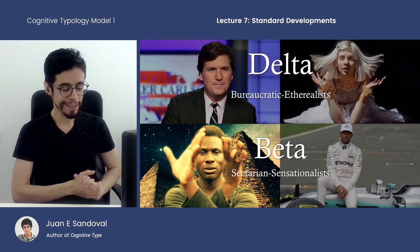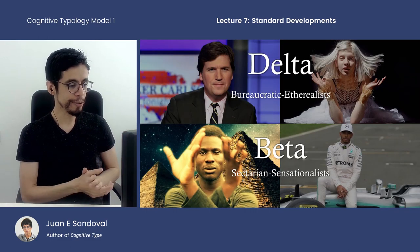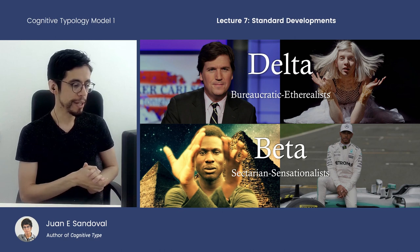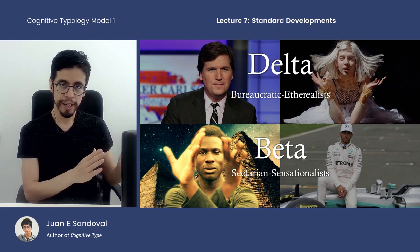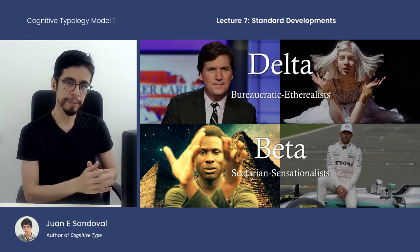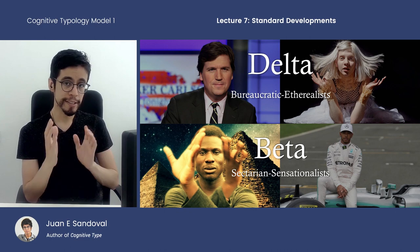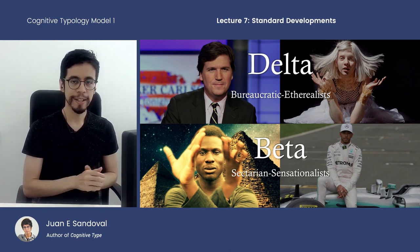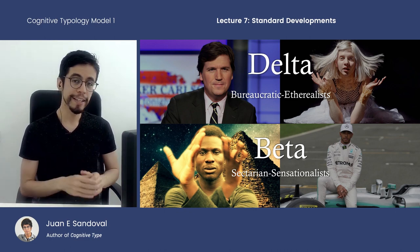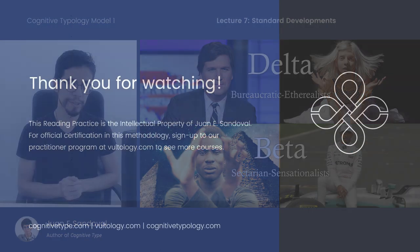So on the whole, the delta types can be described as bureaucratic etherealists, and the beta types are described as sectarian sensationalists. Now we're going to look at the gamma type.